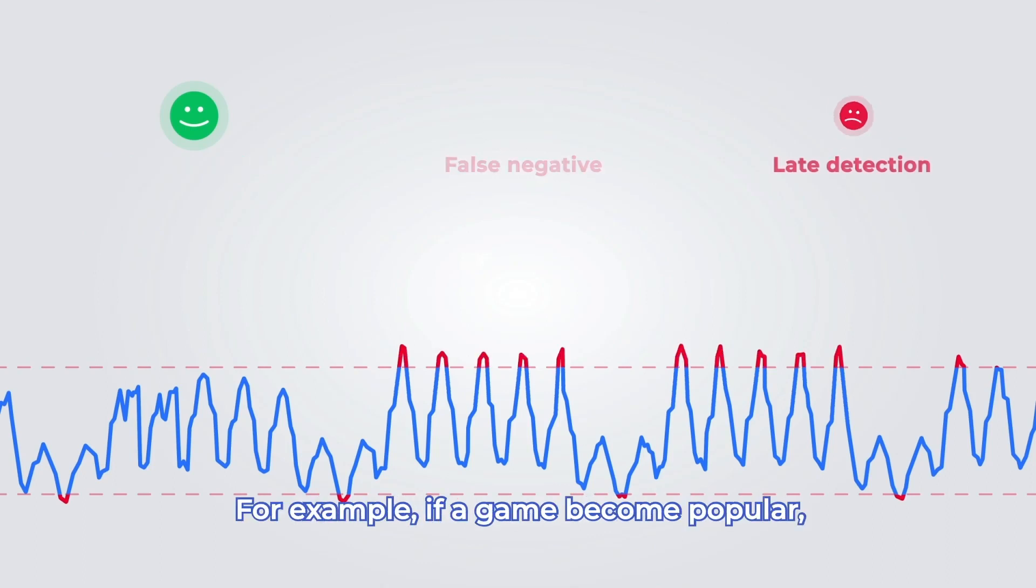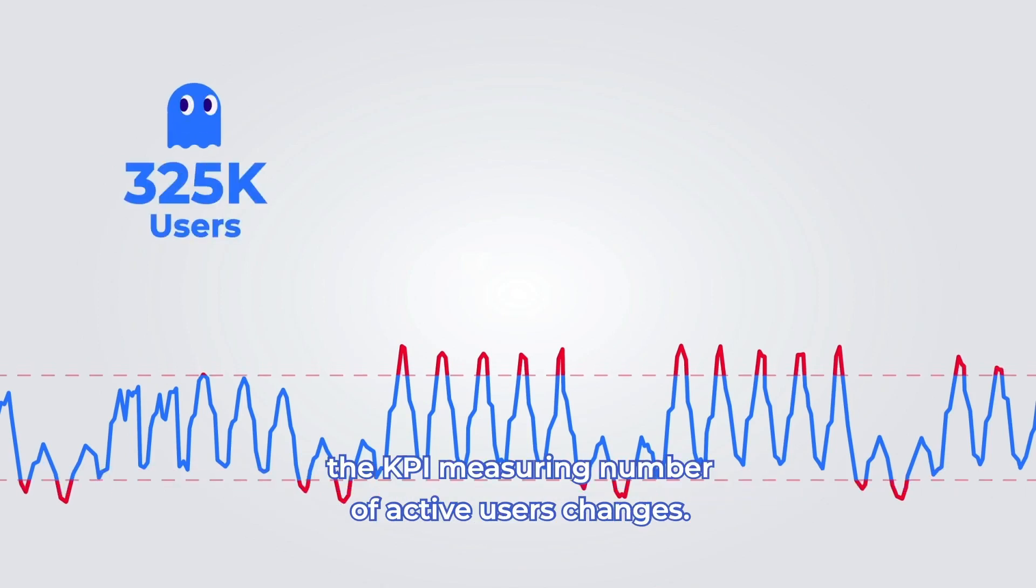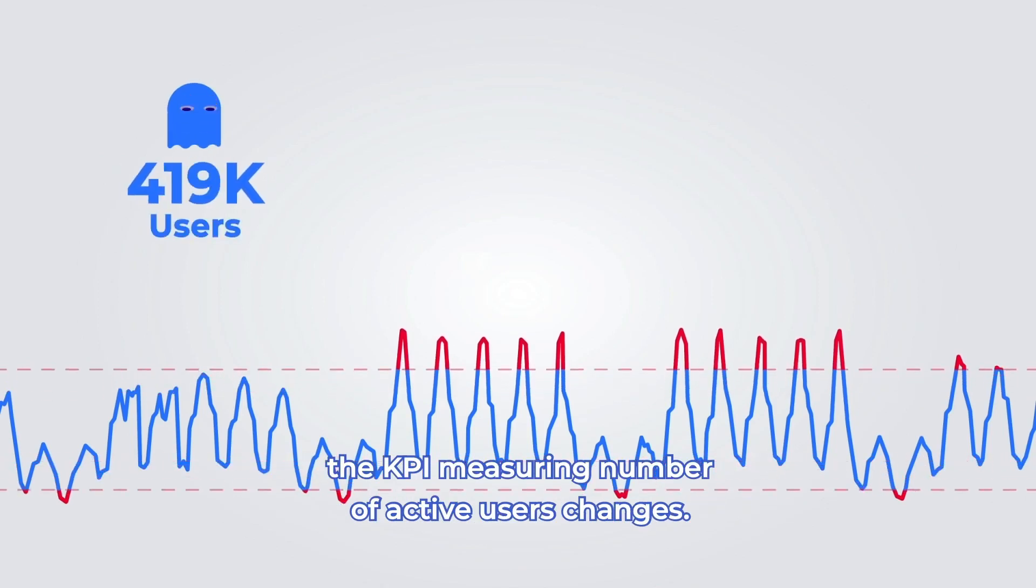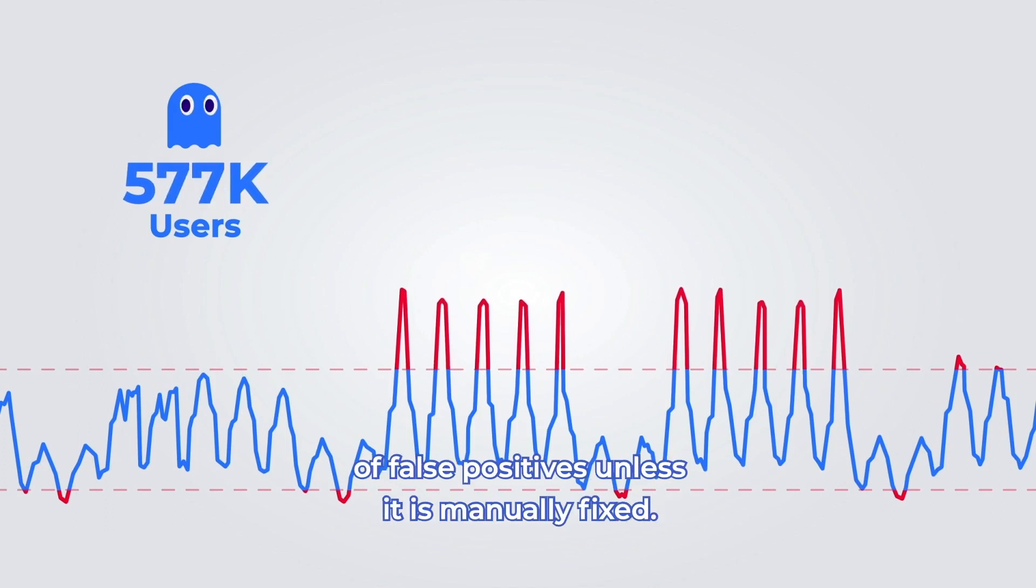For example, if a game becomes popular, the KPI measuring number of active users changes and a static threshold alert would send a lot of false positives unless it is manually fixed.